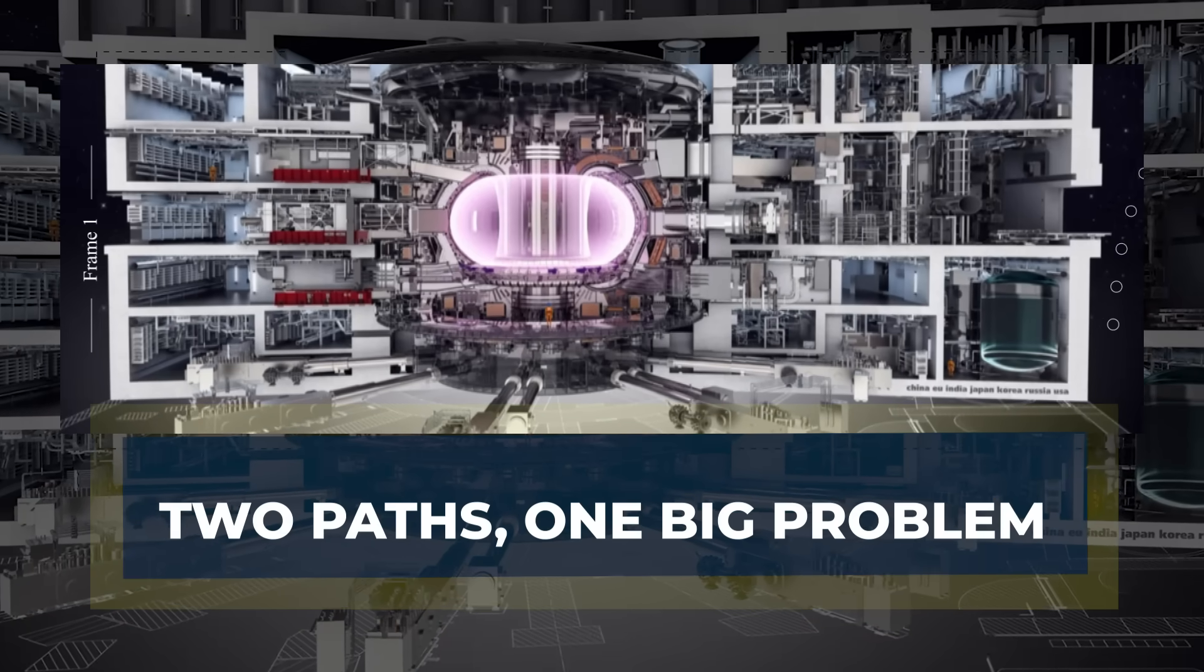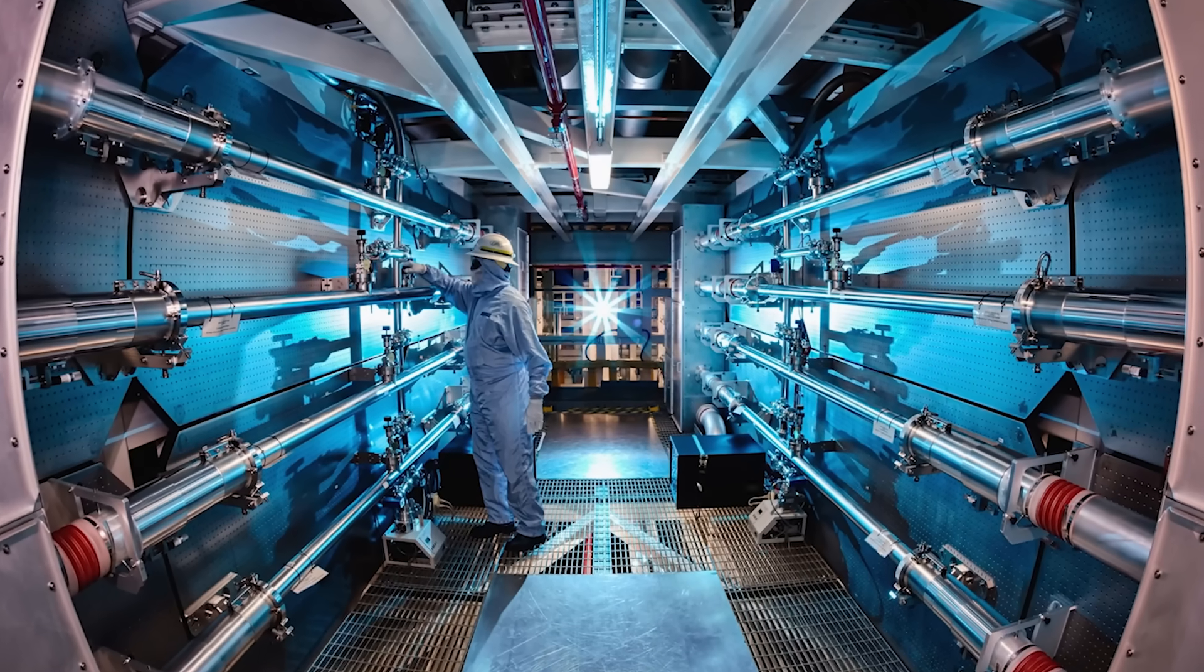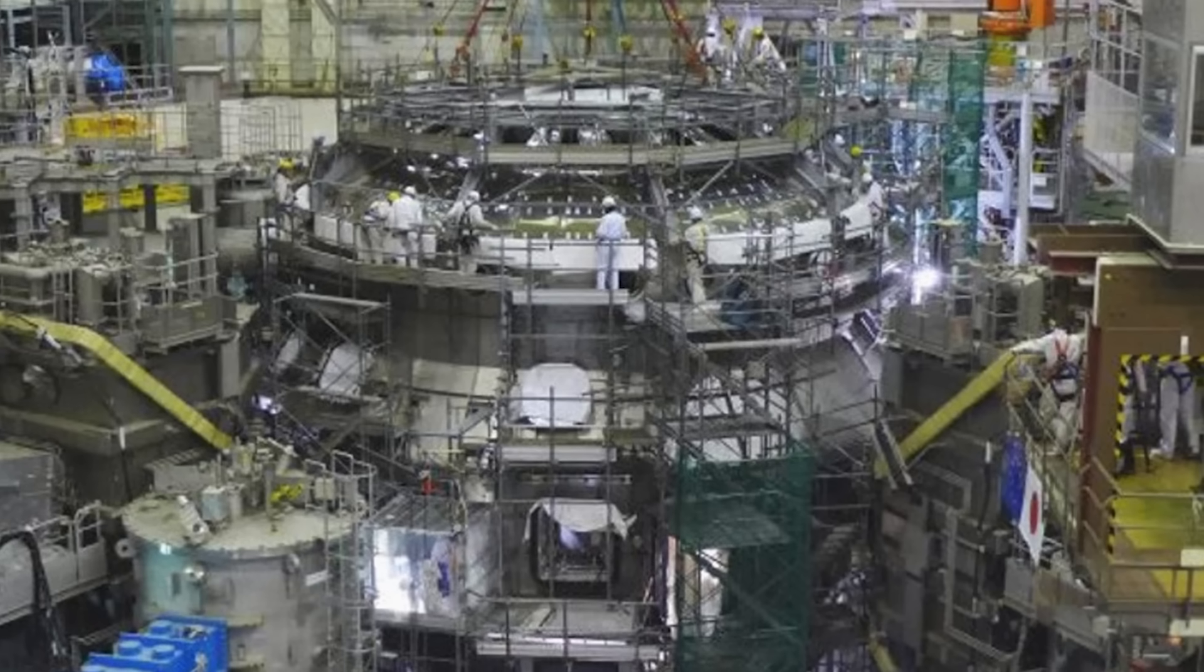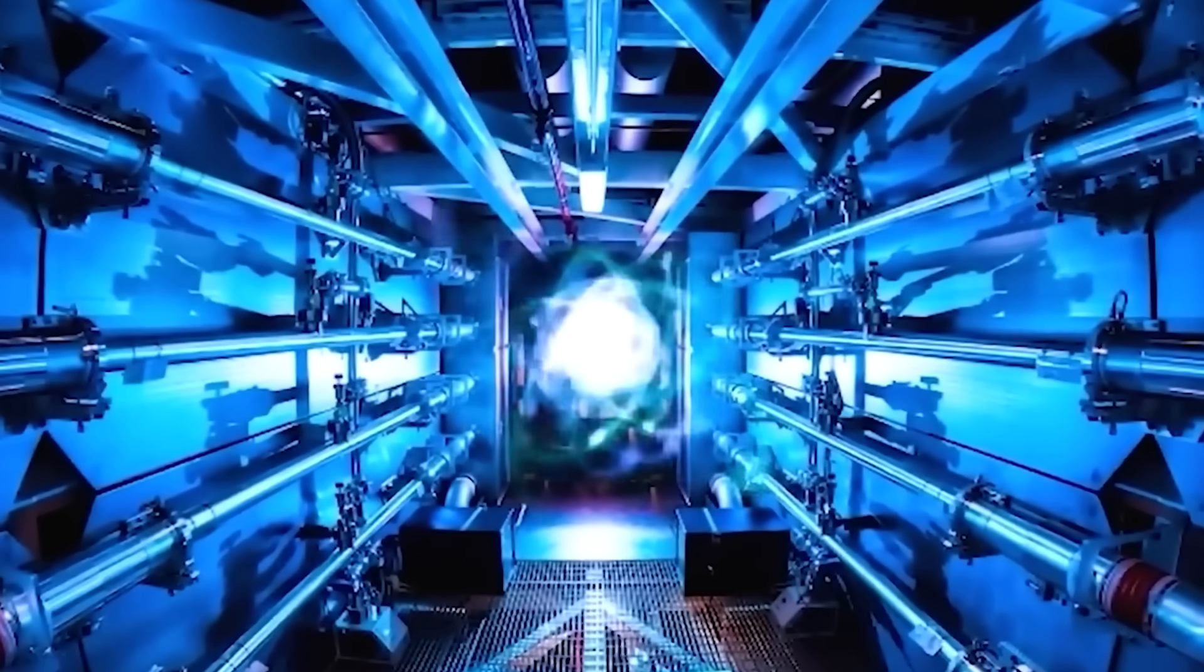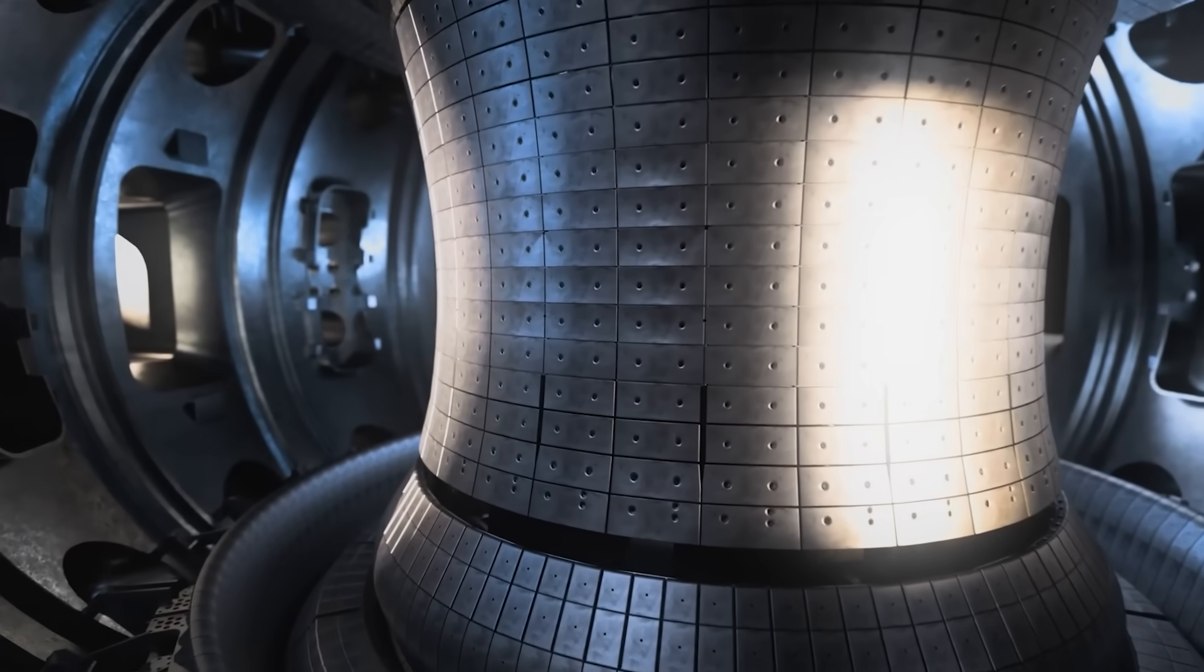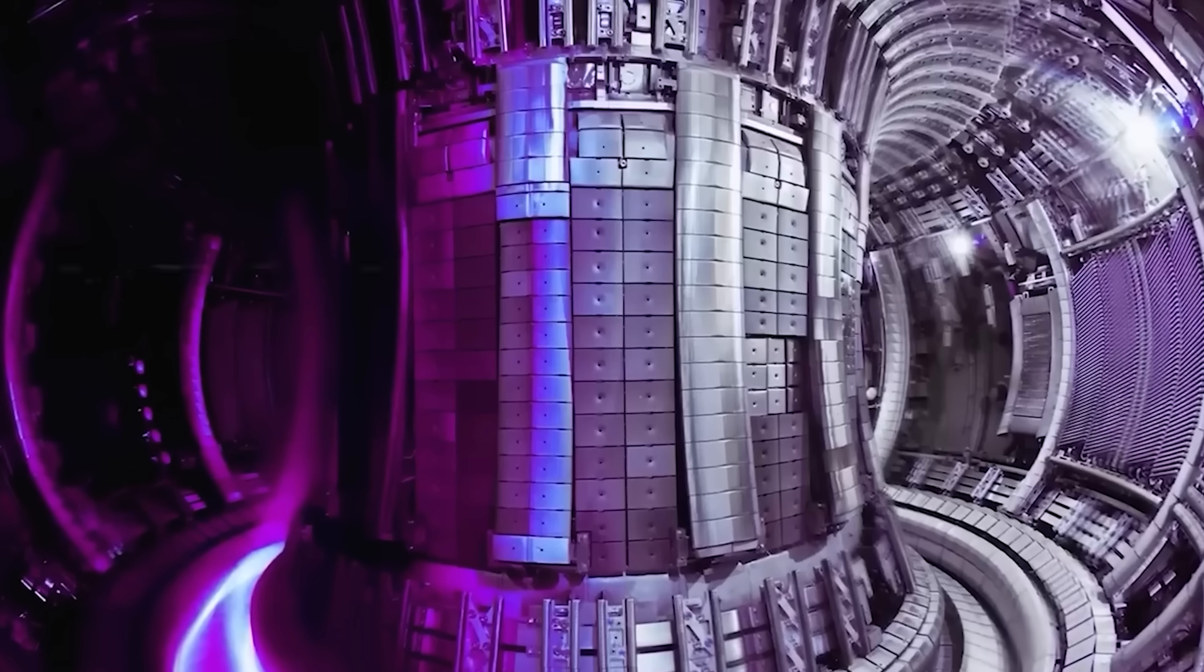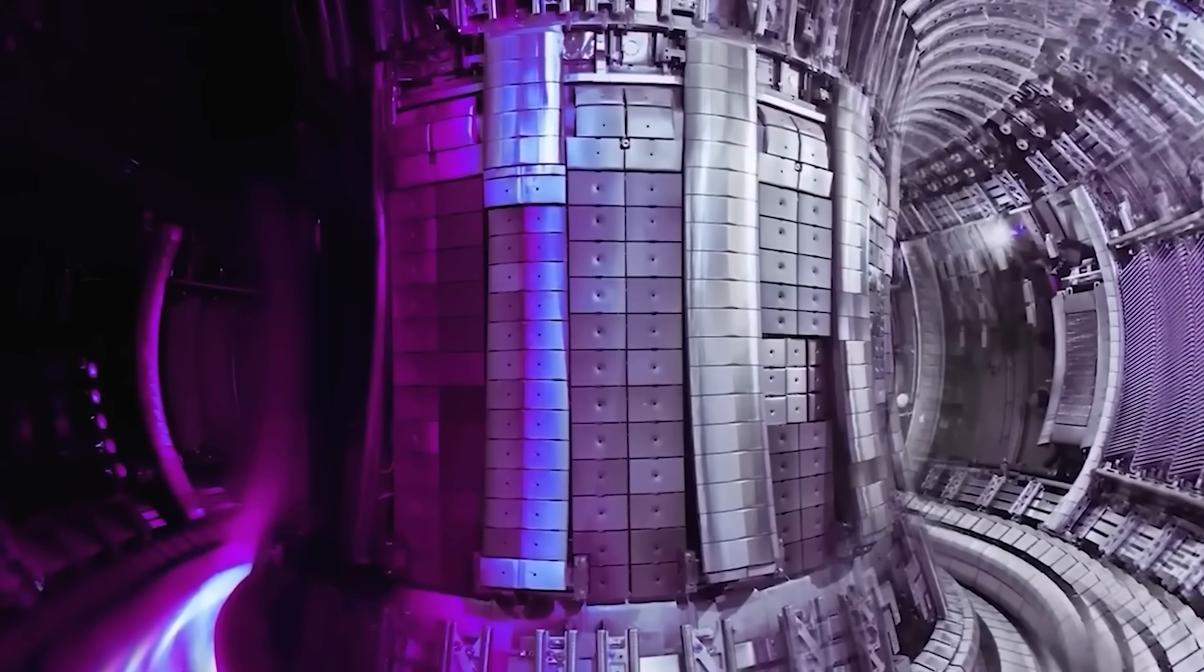Two paths, one big problem. By the 1960s, fusion research split into two main designs. Tokamaks use external magnets, but they also run a strong electric current through the plasma. That current helps twist the magnetic field and tighten the trap. Tokamaks are simpler to draw, simpler to model, and easier to manufacture in a clean, symmetric shape. That is why most countries bet on them, and why so many headlines mention Tokamak projects.